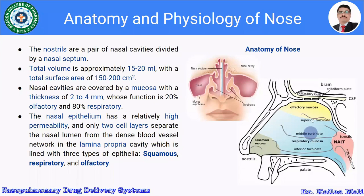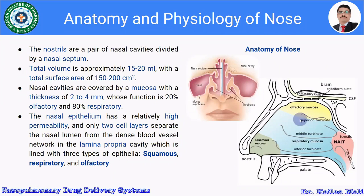The olfactory region comprises the olfactory mucosa. Between the middle turbinate and inferior turbinate, the respiratory mucosa is present. Here is the superior turbinate, the squamous mucosa, and the nostrils.